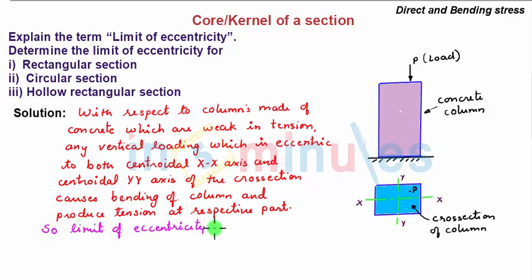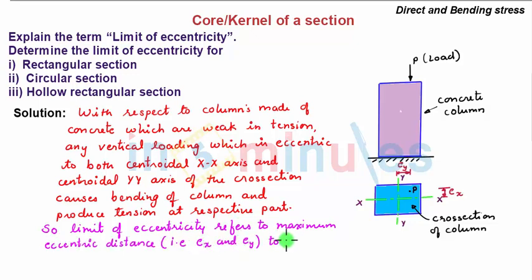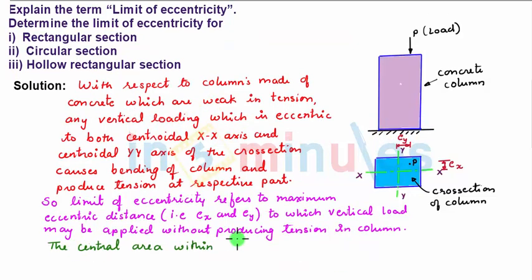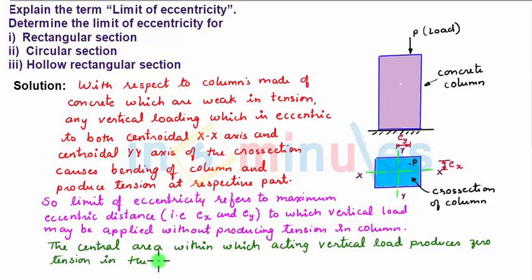Limit of eccentricity refers to maximum eccentric distance, that is ex and ey, to which vertical load may be applied without producing tension in the column. The central area within which acting vertical load produces zero tension in the column is called core or kernel of a section.